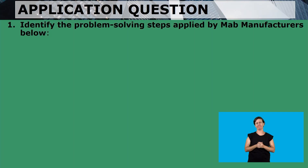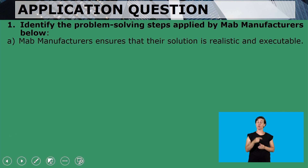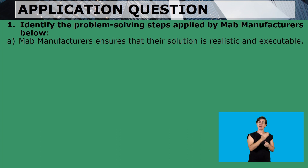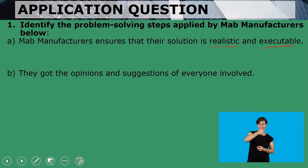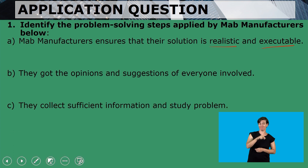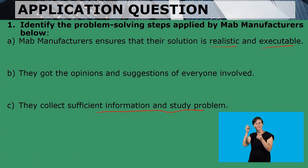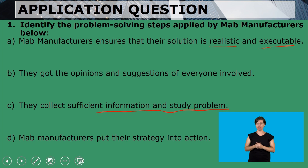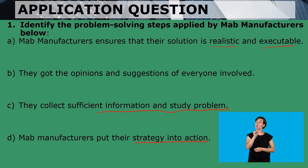We start with our first application question: identify the problem-solving steps applied by MAP manufacturers. The first statement says MAP manufacturers ensure that their solution is realistic and executable. Secondly, they got the opinions and suggestions of everyone involved. Thirdly, they collect sufficient information and study the problem. Lastly, MAP manufacturers put their strategy into action.